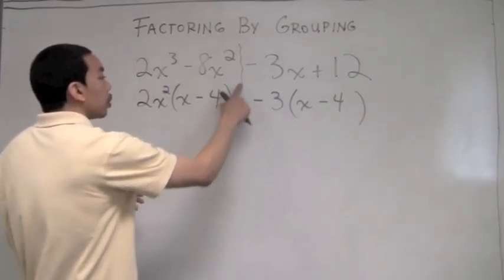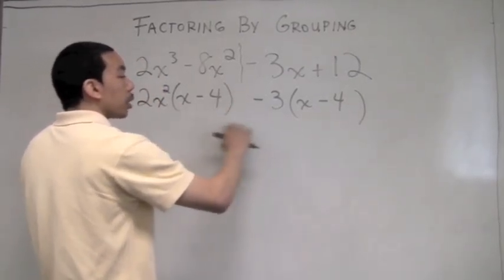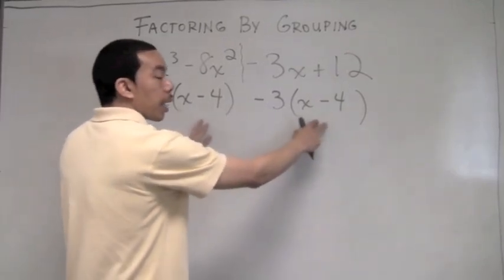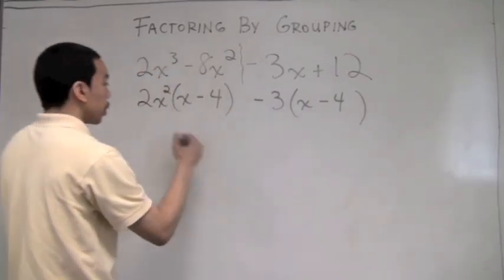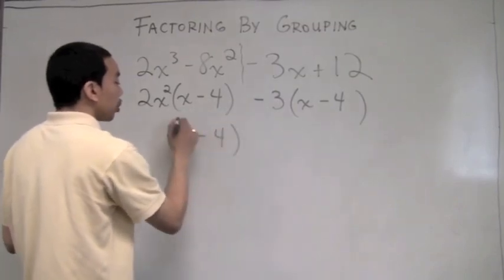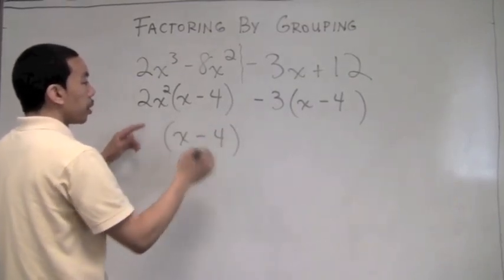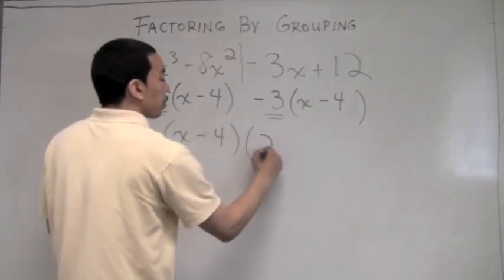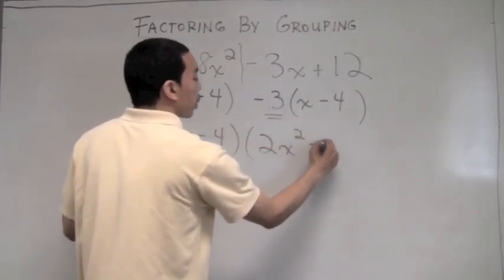But they repeat itself. So if we look at this as one long polynomial again, the GCF of this line would be x minus 4. So x minus 4 is written out. And then the ones on the outside, the 2x² and the negative 3, can be written together: 2x² minus 3.